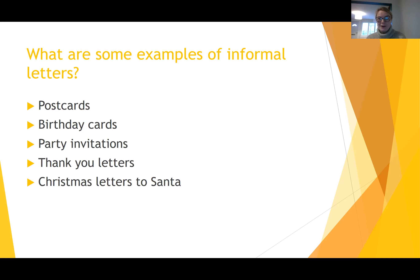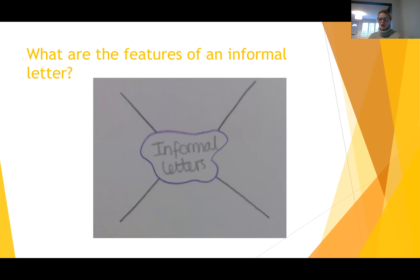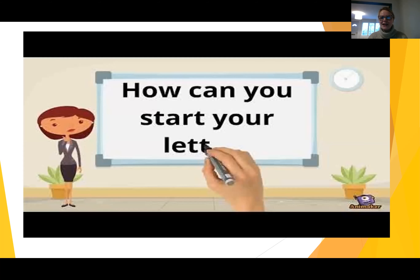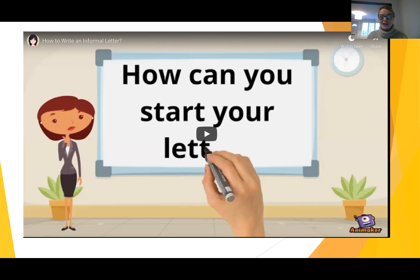Some of you came up with some ones that I hadn't thought about when I saw your work from the other day. So let's move on to our learning for today. What are the features of an informal letter — so how do we lay one out? I would like you to draw the middle of a bubble map. Can you see I've got 'informal letters' in the middle of mine? Pause the video now and draw yourself the start of a bubble map with 'informal letters' in the middle. We have got a video to watch. In this video it talks about informal letters and the features of them — so how to lay one out. Let's have a watch together.